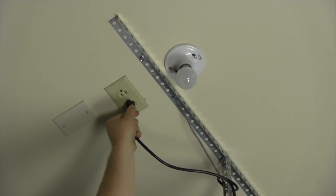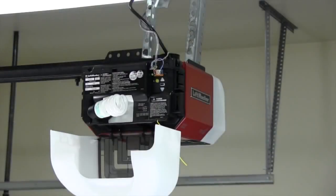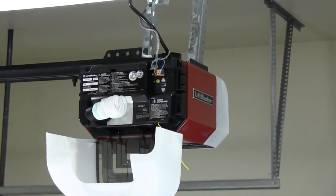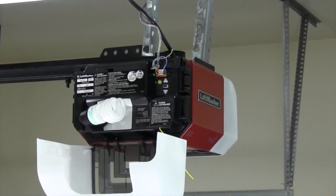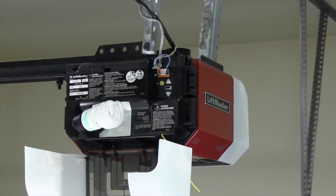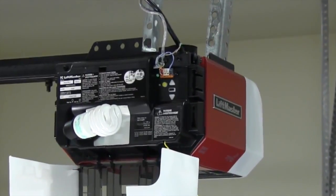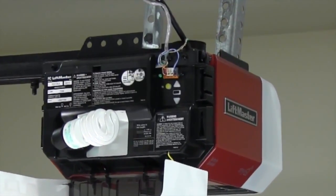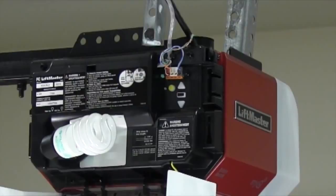Plug in the garage door opener. The battery status LED on the garage door opener will blink green indicating the battery is charging. When the LED is solid green, it means the battery is fully charged. The battery will take 24 hours to fully charge.